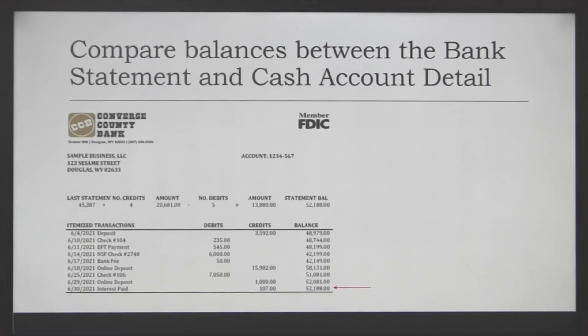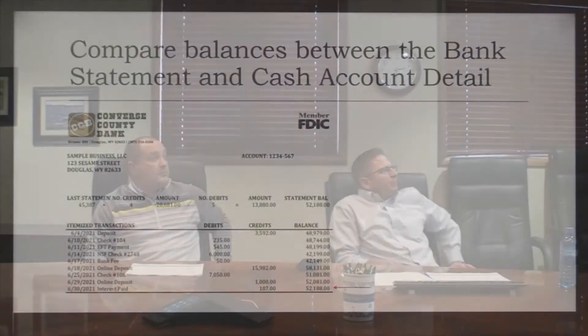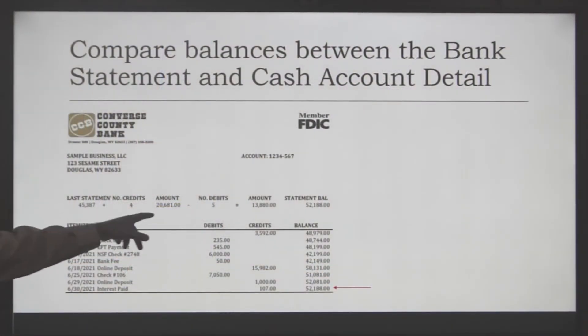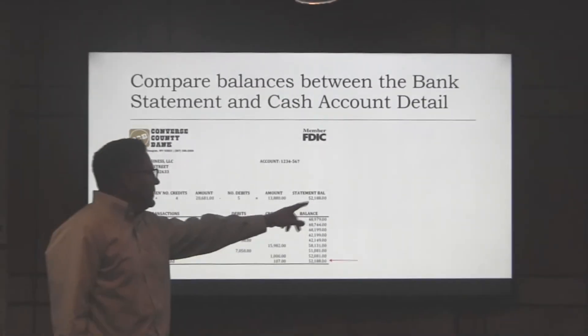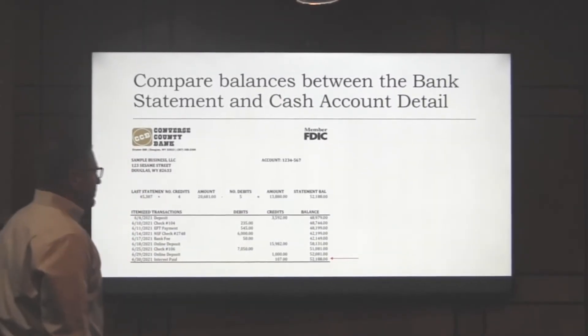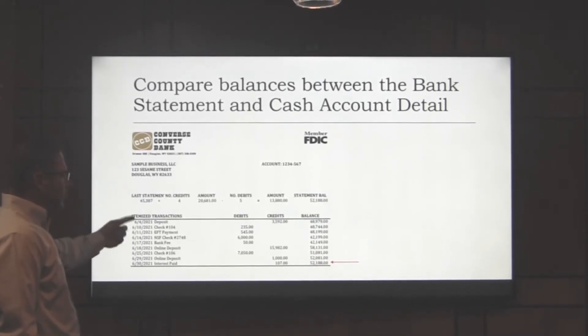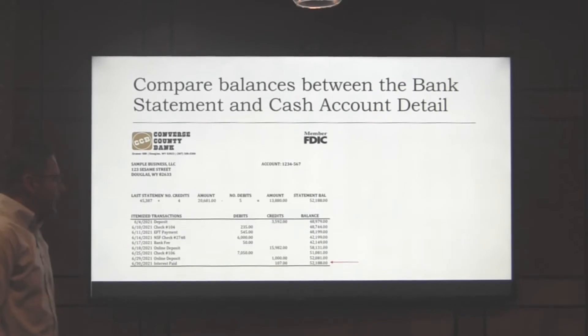The first step, once you have all the information you need, is to compare the balances between the bank statement and the cash account detail. When you're looking at a bank statement — this is a pretty simplified version, but it'll look something like this — it'll have the last statement balance, the amount of credits, the amount of debits, and the ending statement balance for this month. Down here you'll see all of the different transactions that hit the account.